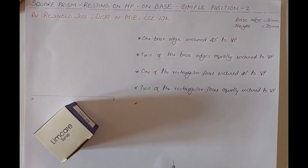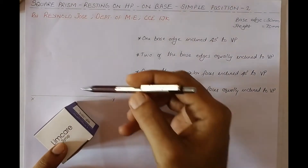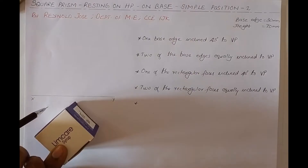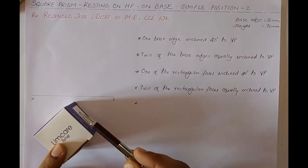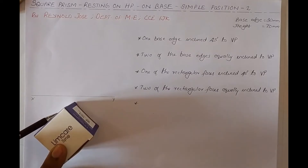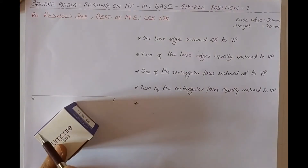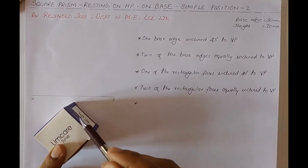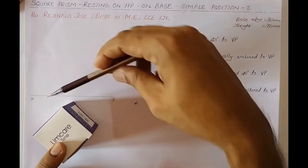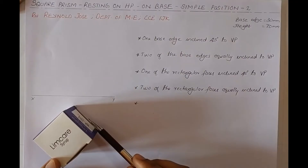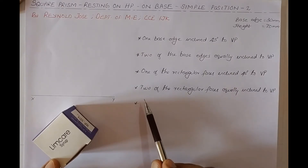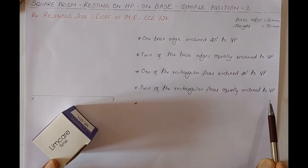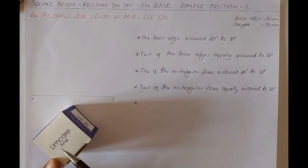These two base edges are equally inclined to VP, and that equal inclination is 45 degrees. Here we have a rectangular face on each side. When observing from the top, we can see only these four edges, but below each of these four edges there is a rectangular face. These faces are equally inclined to the vertical plane at 45 degrees. You can call this simple position as two rectangular faces equally inclined to VP.